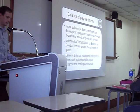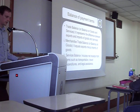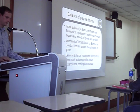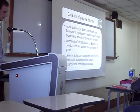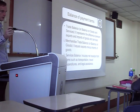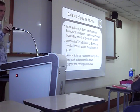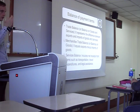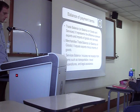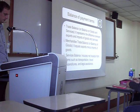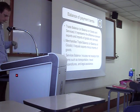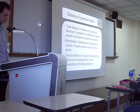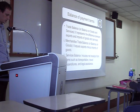Here are some terms we can see in the balance of payments. Trade balance represents the difference between exports and imports of goods and services. In the current account we also have small items like gifts to foreigners or remittances. Trade balance is just goods and services. Merchandise trade balance is just goods.